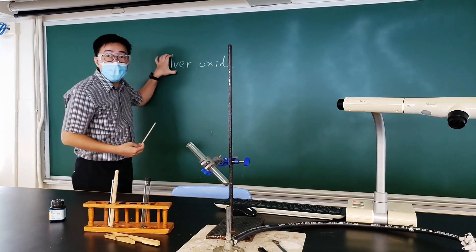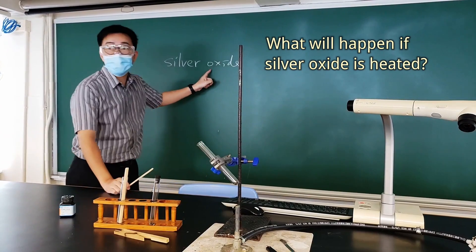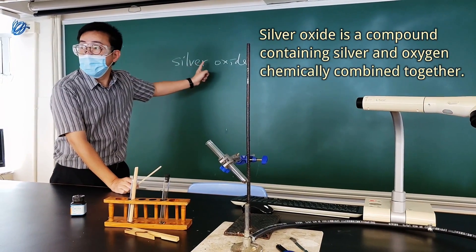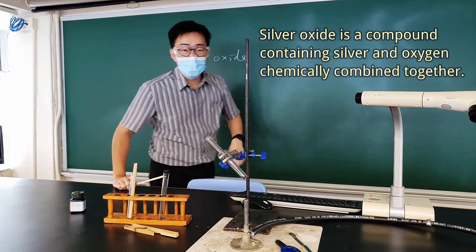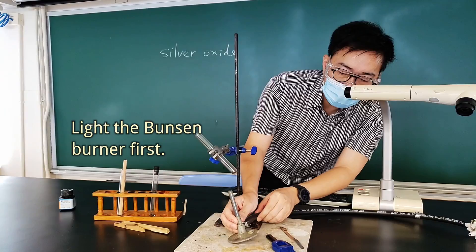I am now going to heat the silver oxide. Actually, we all know that silver oxide must contain oxygen inside, but it has been chemically combined with the silver to form a compound, being black in color. So I am to heat the silver oxide. Of course, first of all, I need to light the burner.